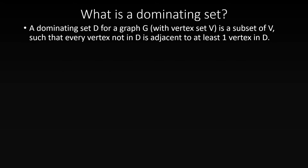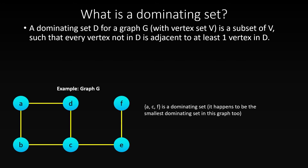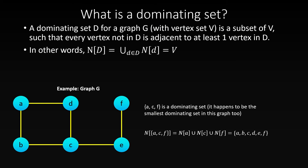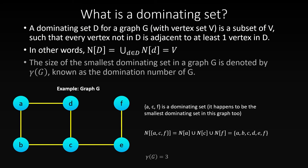A dominating set D in a graph G is a set of vertices such that all vertices not in set D are adjacent to at least one vertex in set D. In other words, the closed neighborhood of the dominating set D equals the vertex set of the graph. The size of the smallest dominating set in a graph G is known as the domination number of G, written as gamma of G.